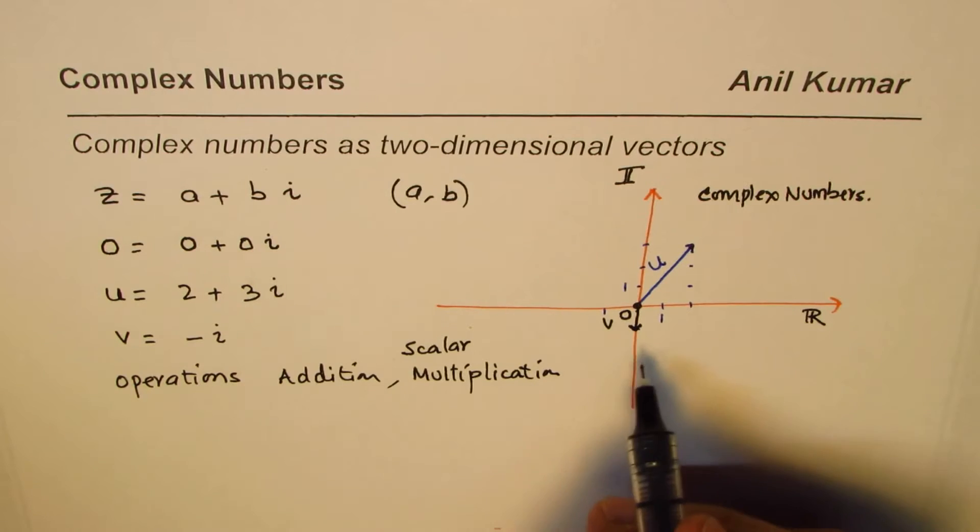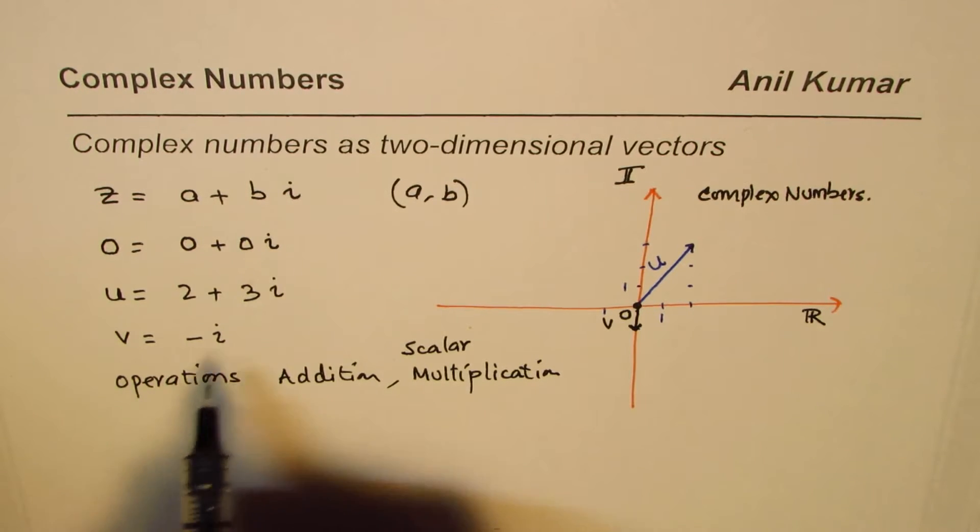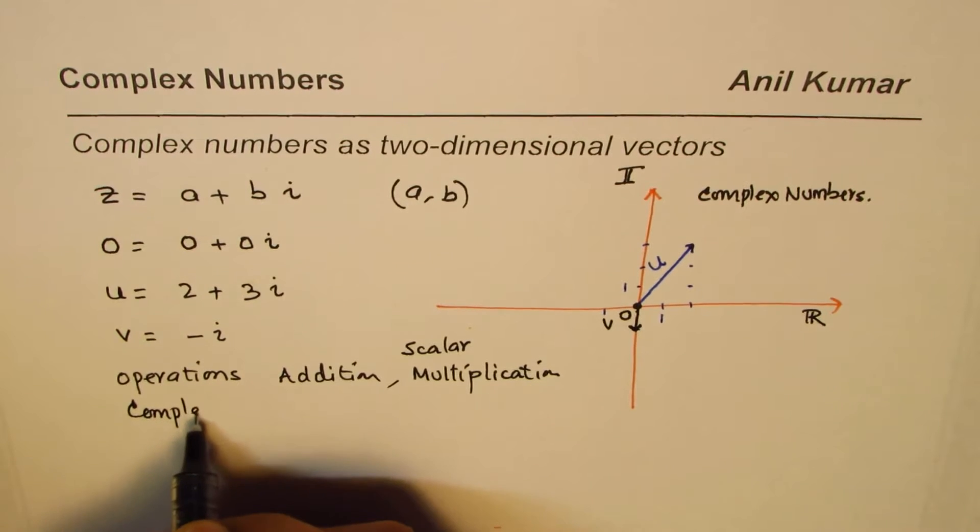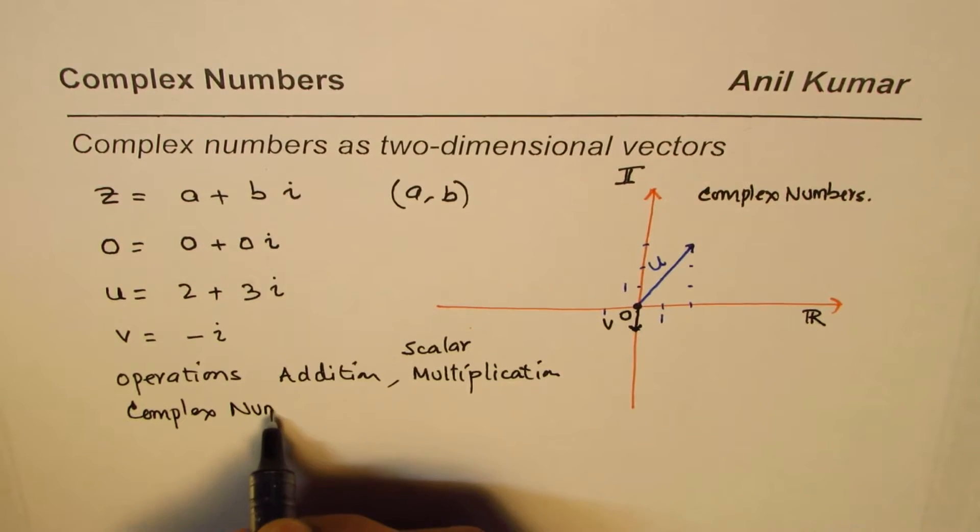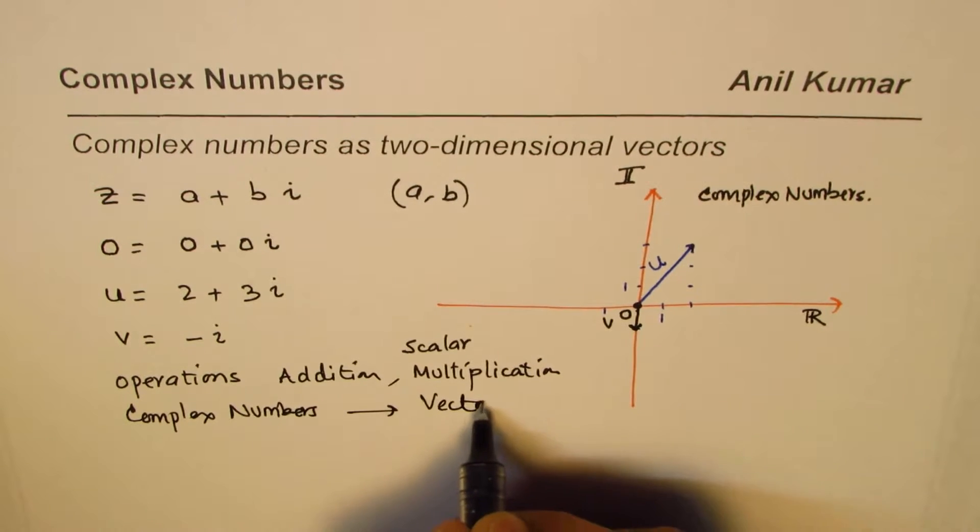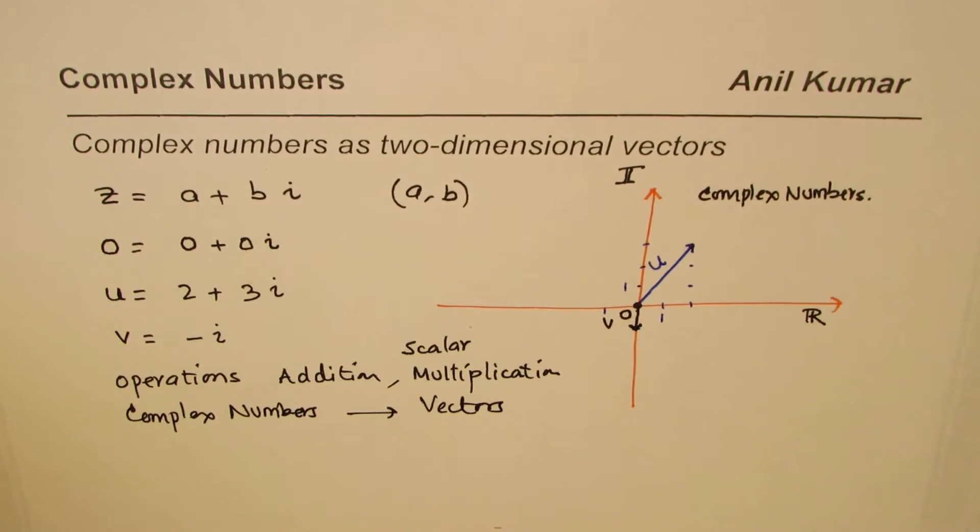On the vectors, using the vector concepts. So what we are trying to do here is relating complex numbers with vectors and then utilizing what we have learned about vectors. Do you get an idea? So that is how they could be related.